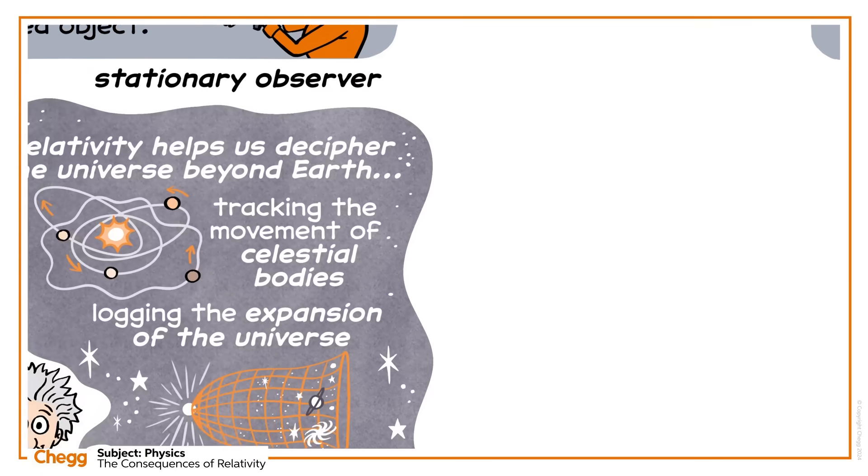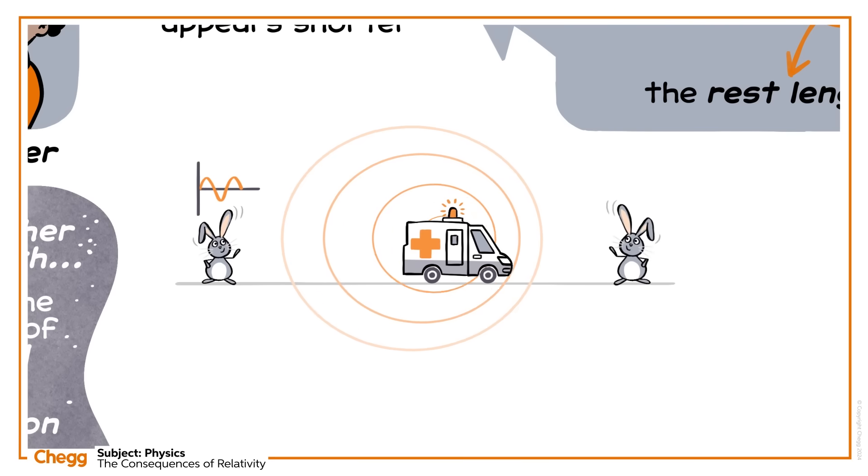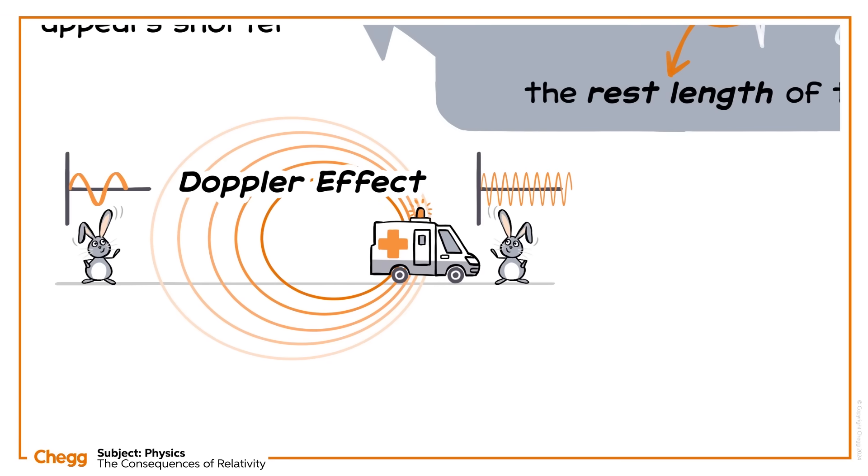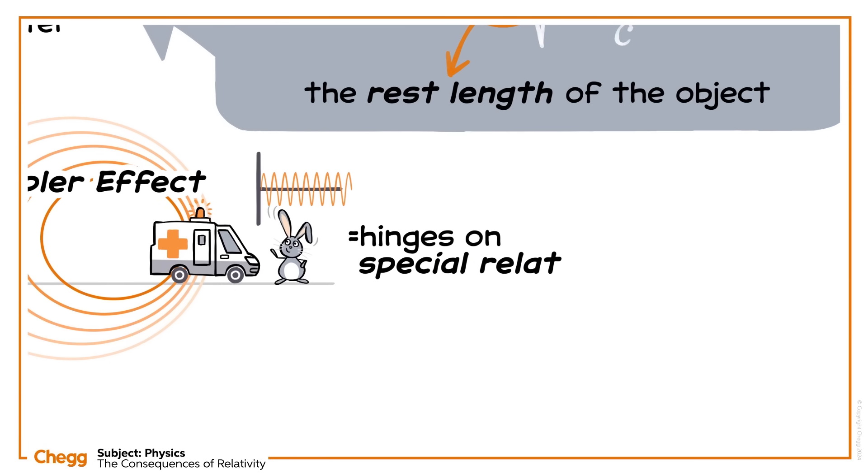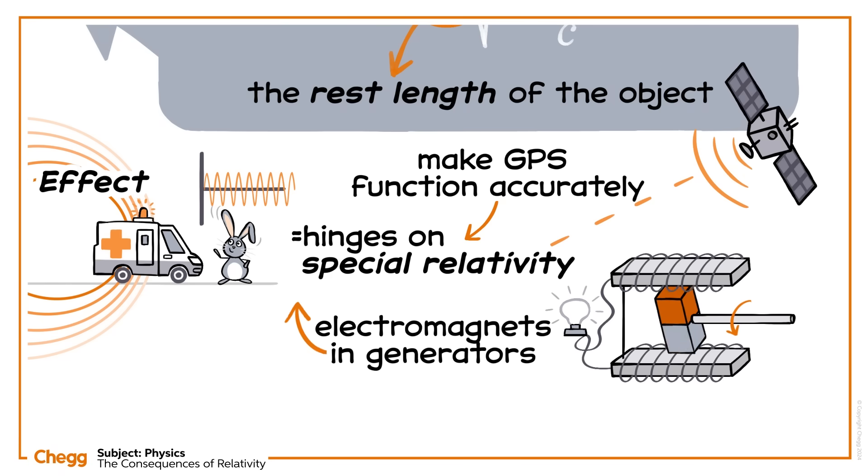Here on Earth, have you ever noticed an ambulance change pitch as it passes by? This is called the Doppler effect, and it hinges on special relativity. To make GPS's function accurately, we must factor it in, and special relativity helps to explain how the electromagnetics in generators work too.